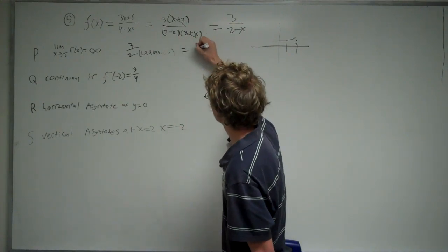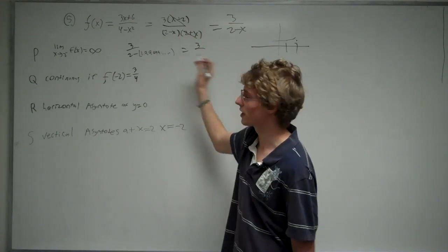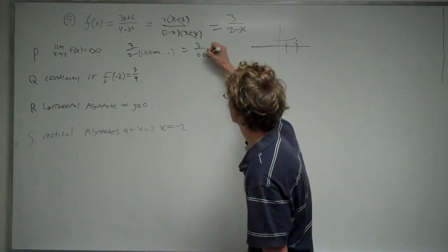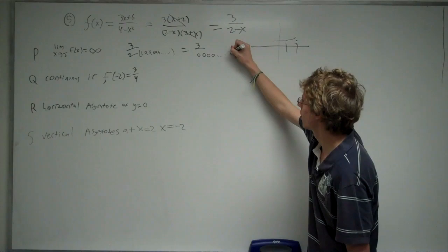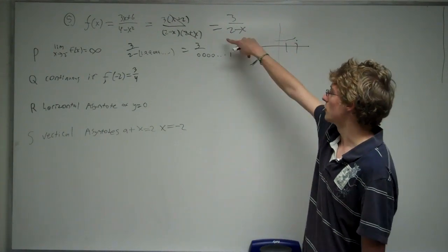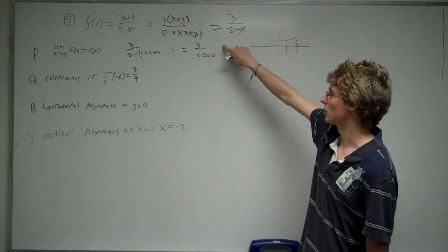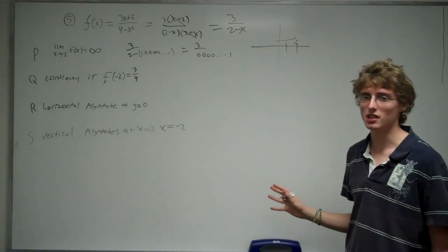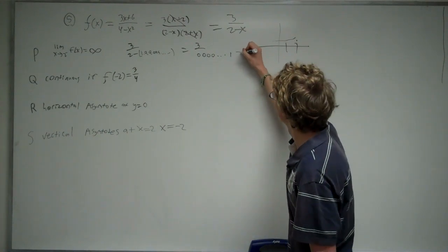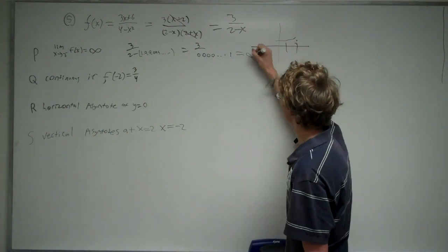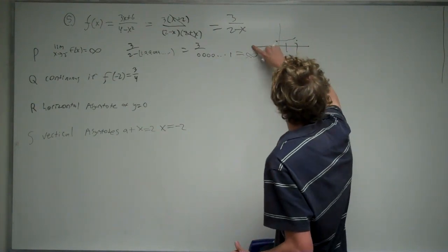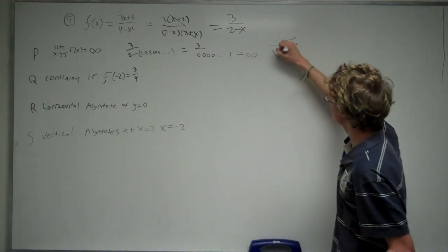That's going to give us 3 over (2 minus 1.99999), which is going to give us a 0.00001 off to infinity. That's a really small number. If you take a number 3 and divide it by a really, really small number off to infinity, you're going to get a really large number, or in this case, you're going to get infinity. So P is true.